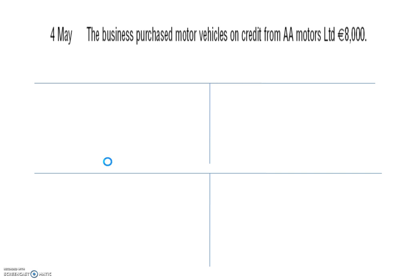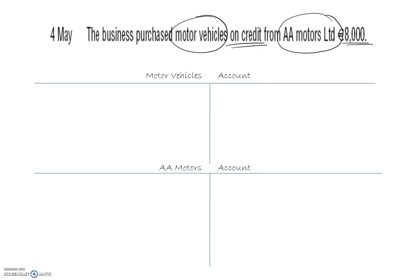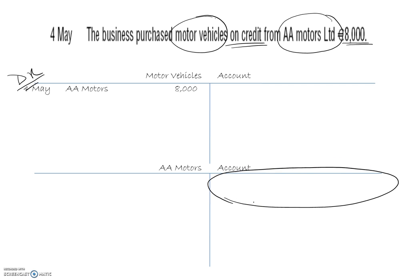4th of May: the business purchased motor vehicles on credit from AA Motors Limited for 8,000. On credit means no money changes hands. We need a motor vehicles account and an AA Motors account. Motor vehicles are assets, so we debit the asset account: 4th of May, AA Motors, 8,000 on the debit side of motor vehicles. On the credit side of AA Motors account we put: 4th of May, motor vehicle, 8,000.